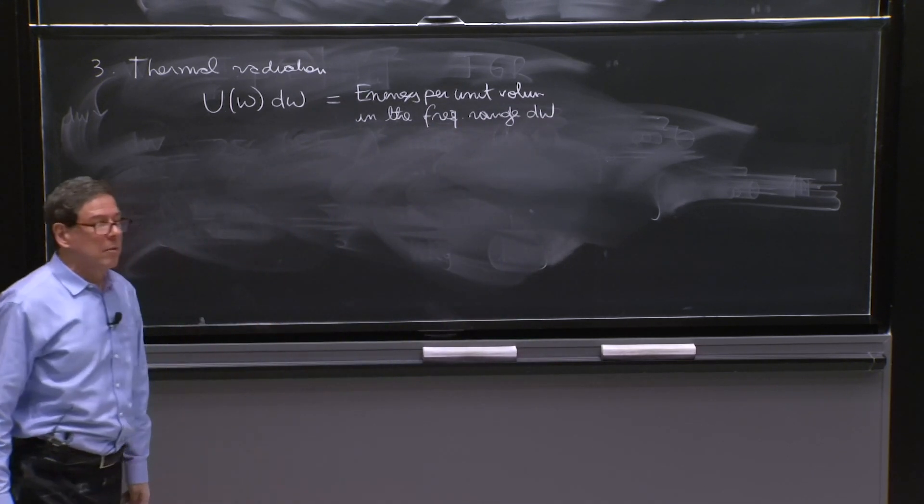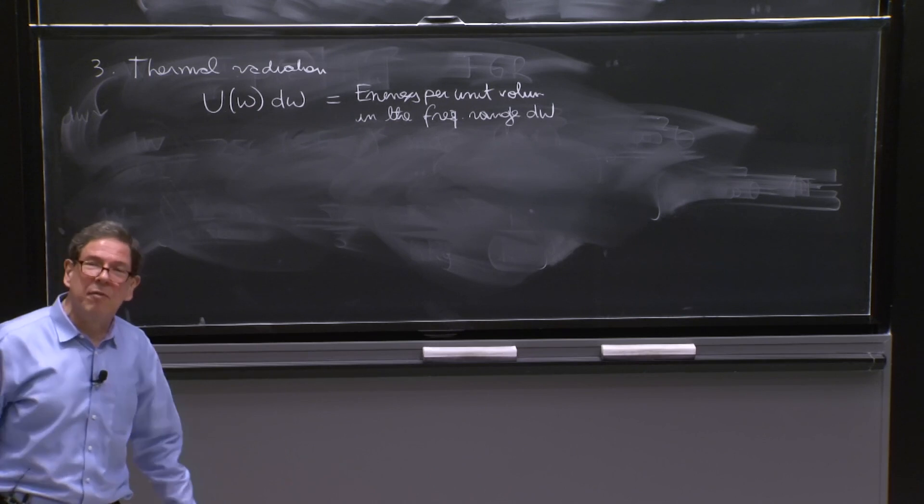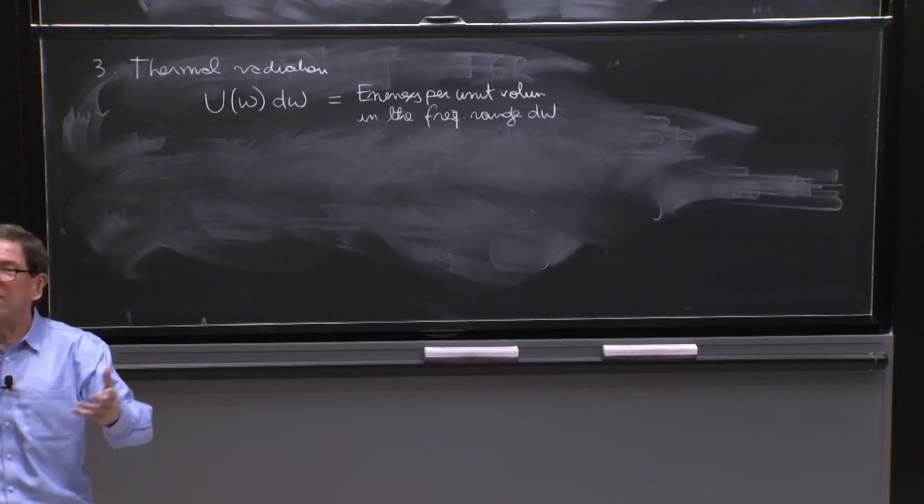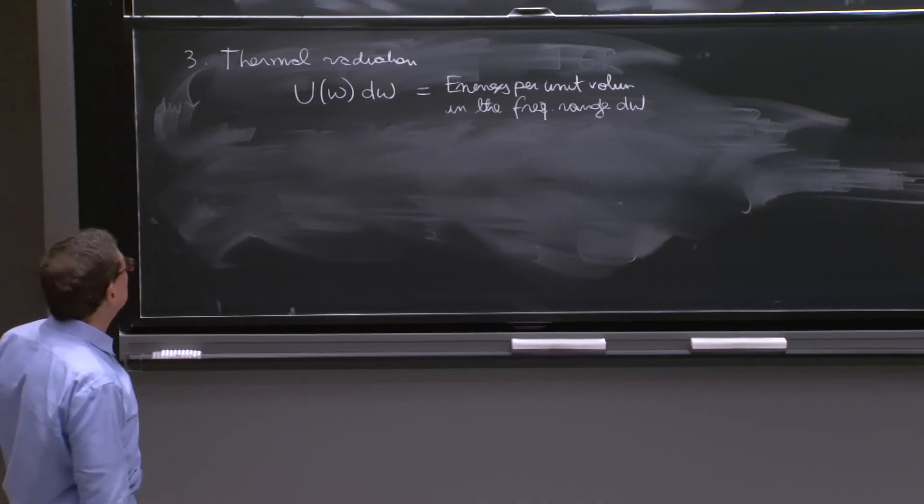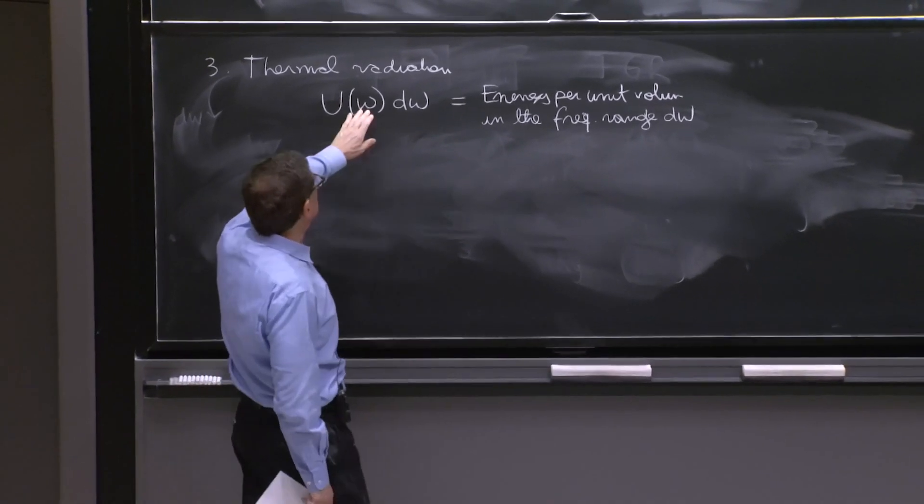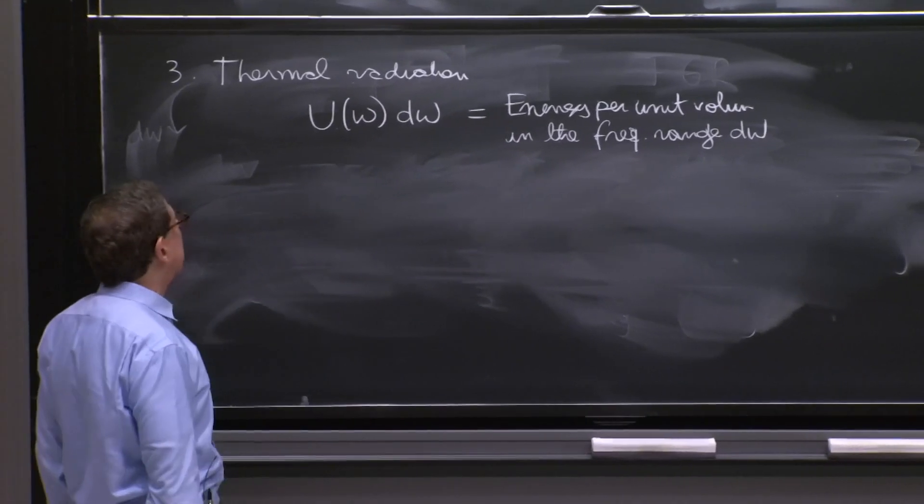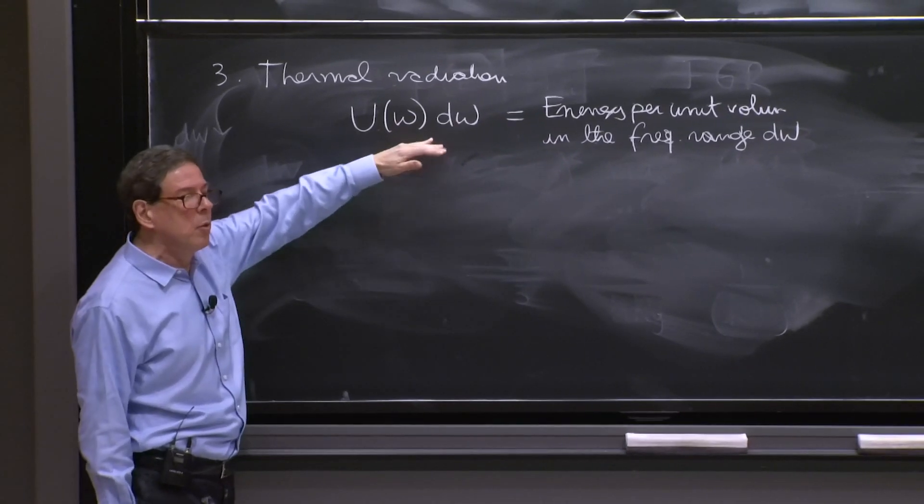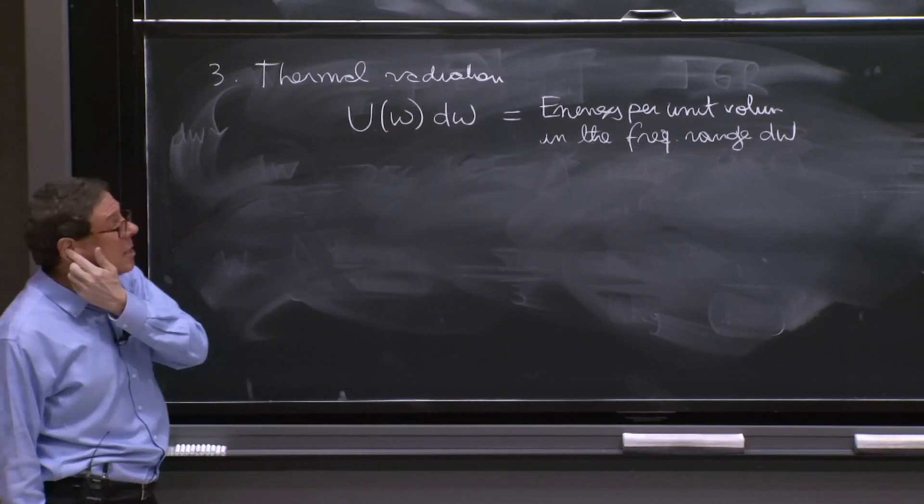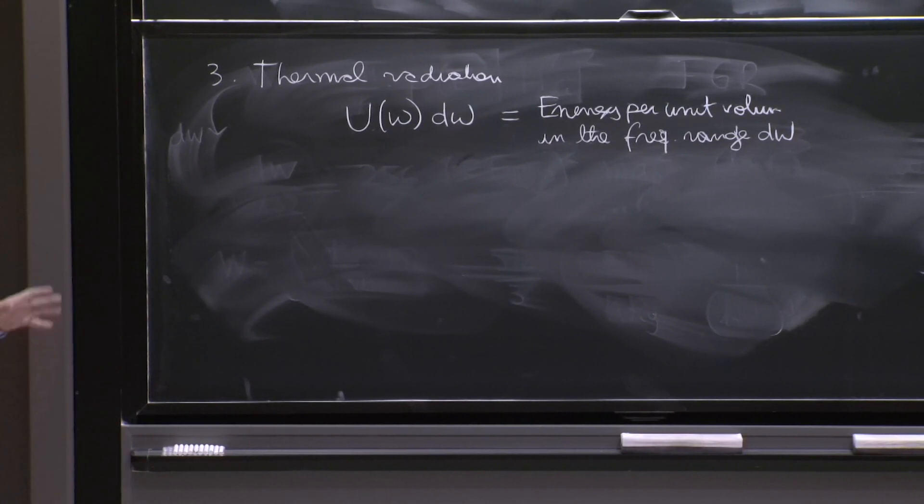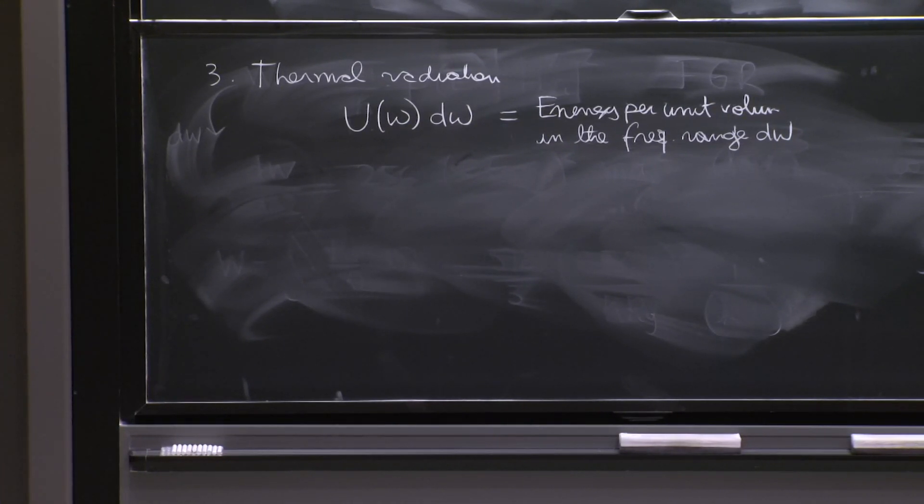In other words, it's kind of a proxy for the number of photons available. All the photons have at some value of the frequency, have energy ℏω. So if you know the energy, you basically are getting here the number of photons with frequency ω in that range per unit volume.